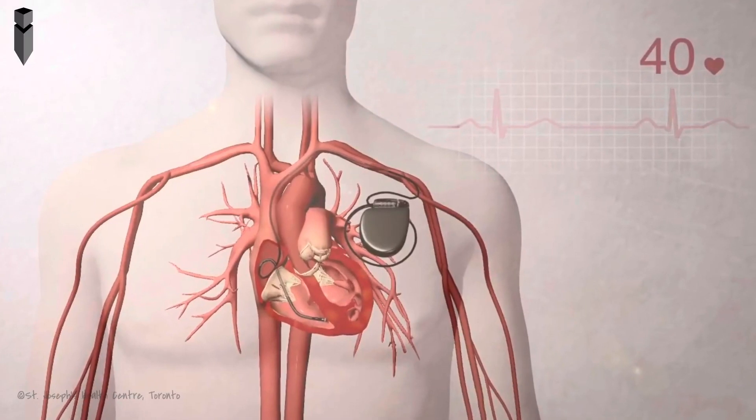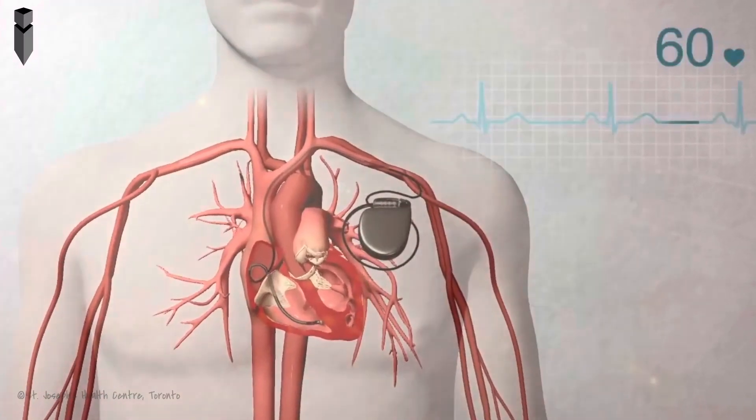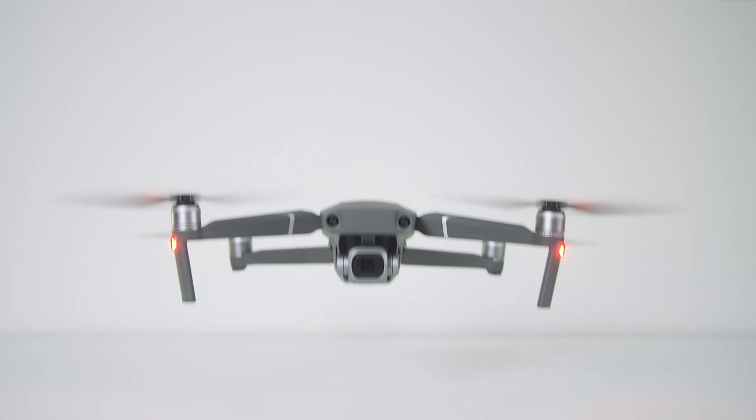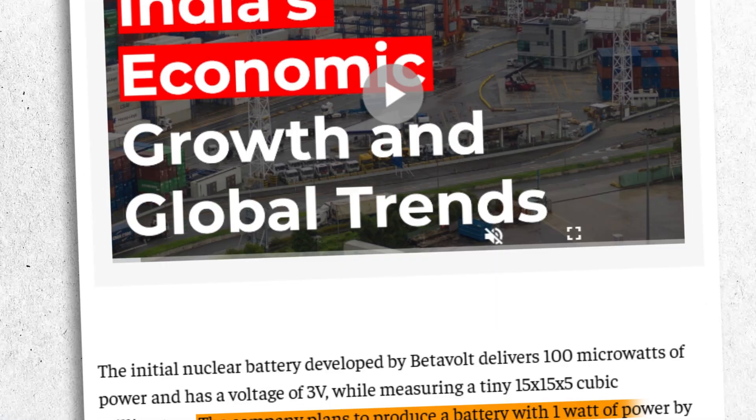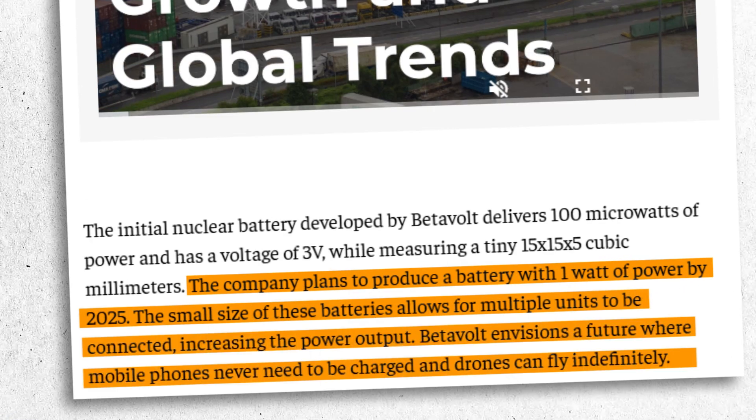That's enough to run a small sensor or a pacemaker, but far from enough to power a smartphone or a drone. BetaVolt plans to release a one-watt battery by 2025, but even that is still a fraction of what's needed for most consumer devices.